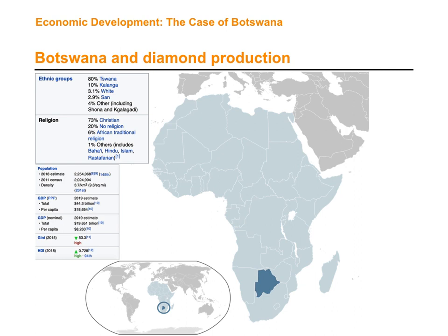The GDP per capita in terms of purchasing power parity, which we can use to compare across countries, is around $19,000 — which is pretty high. In terms of the Gini coefficient and the Human Development Index, both values are also high.